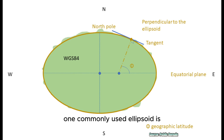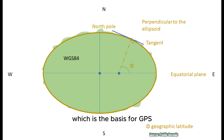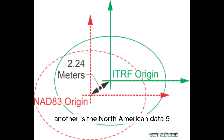One commonly used ellipsoid is the World Geodetic System, WGS84, which is the basis for GPS. Another is the North American Datum, NAD83, used in North America.